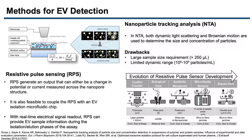Following isolation and enrichment of EVs, the EVs must be enumerated in many cases. Current methods that can directly analyze EVs from a physical perspective include nanoparticle tracking analysis and resistive pulse sensing. In NTA, both dynamic light scattering and Brownian motion are used to determine the size and concentration of particles. However, large sample size requirement and limited dynamic range are some of the drawbacks of nanoparticle tracking analysis.